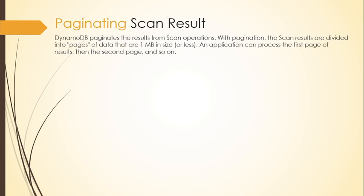So how do you retrieve all records when there is more than 1 MB of data? You use pagination. DynamoDB paginates the results from scan operations — the scan results are divided into pages of data that are 1 MB in size or less. An application can process the first page of results, then the second page, and so on. You must execute multiple scan operations to retrieve all data larger than 1 MB, page by page.